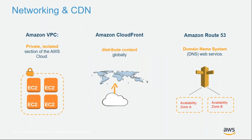For networking and CDN, the core concept is Amazon VPC — the Virtual Private Cloud — your private isolated section in the AWS cloud. It allows you to create your own networking and firewall rules and isolate your infrastructure. Amazon CloudFront is our content delivery network, distributing content globally via 100 plus edge locations. Amazon Route 53 is a domain name service allowing you to manage all of your domains and enable multi-region deployments and cross-regional disaster recovery.